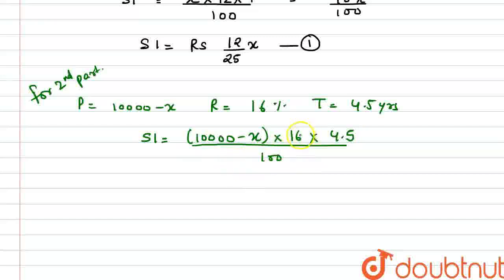So, if we calculate it, this will be our simple interest is equal to, bracket open, so 16 into 4.5 into 10,000, this will be 7,200 minus 16 into 4.5 divided by 100. So, this will be 18 by 25x. So, this will be our total in rupees. So, this is our simple interest.